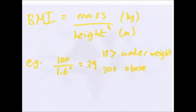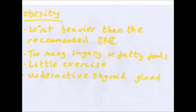BMI ranges vary slightly between doctors, but generally below 18.5 is underweight, above 25 to 30 is overweight, and 30 or above is obese. Obesity is basically being 20% heavier than the recommended weight.